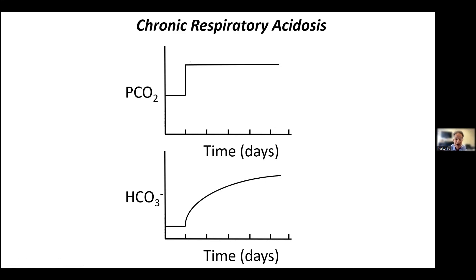Prior to achieving the new steady state, the bicarbonate will not have increased sufficiently to fit the chronic rule. It'll look mixed — somewhere between acute and chronic respiratory acidosis rules. Clinically, you often don't know how long the process has been going on. Don't be fooled into calling something mixed just because it doesn't fit — you may be in between the initial event and the new steady state.